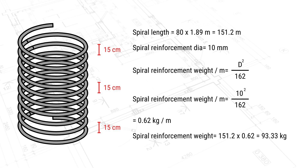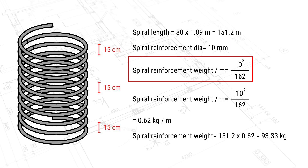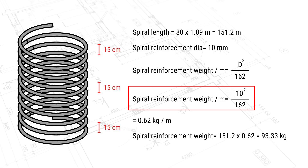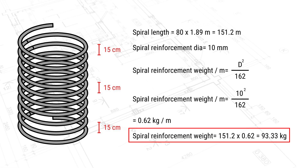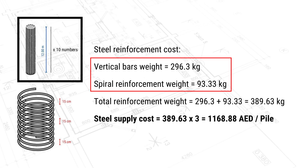To calculate the weight of the spiral reinforcement, the total length is 151.2 m and the spiral diameter is 10 mm. Using the formula: weight per linear meter = 10² ÷ 162 = 0.62 kg/m. So the spiral reinforcement weight = 151.2 × 0.62 = 93.33 kilograms. Adding the vertical reinforcement of 296.3 kg gives a total reinforcement weight of 389.63 kg per pile.